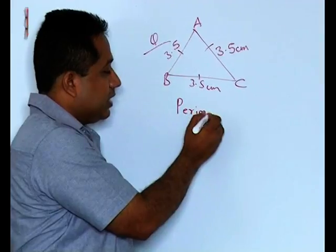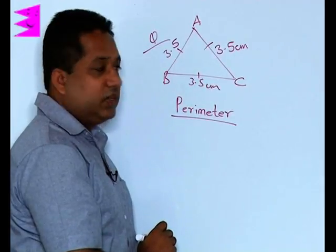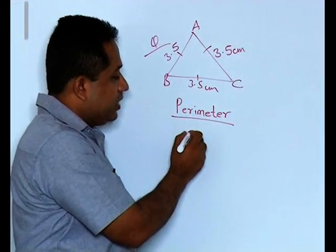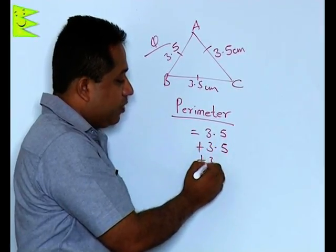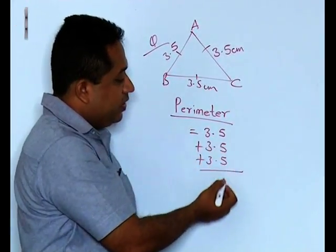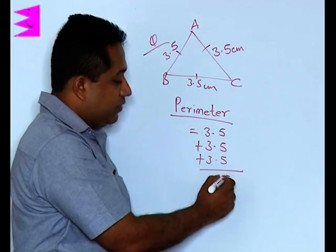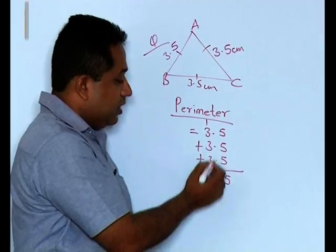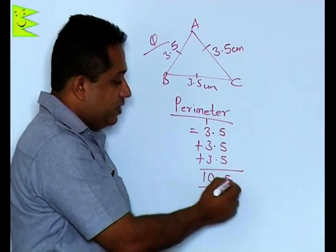The perimeter of a triangle is the sum of its three sides. In this case the side is 3.5, which means the perimeter will be 3.5 plus 3.5 plus 3.5, or 3.5 multiplied by 3. Adding these: 5 plus 5 plus 5 is 15, carry 1; 3 plus 3 plus 3 plus 1 is 10. Placing the decimal, we get 10.5 centimeters.